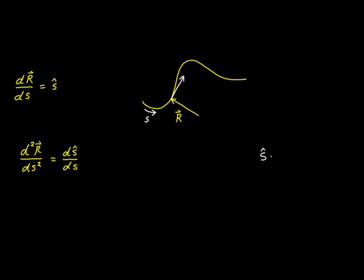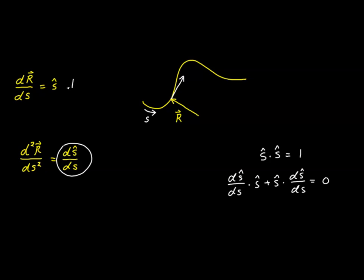Let's look at the expression s-hat dotted with itself, which we know equals 1. Taking the derivative of both sides with respect to s, and using the product rule, gives us: ds-hat/ds dotted with s-hat, plus s-hat dotted with ds-hat/ds, equals 0. Since the dot product is commutative, these two terms are exactly equivalent, so each must equal 0. This tells us that ds-hat/ds dotted with s-hat equals 0, meaning these two vectors are orthogonal — perpendicular to each other. In other words, this expression we're looking for has to point at right angles to the unit vector itself.